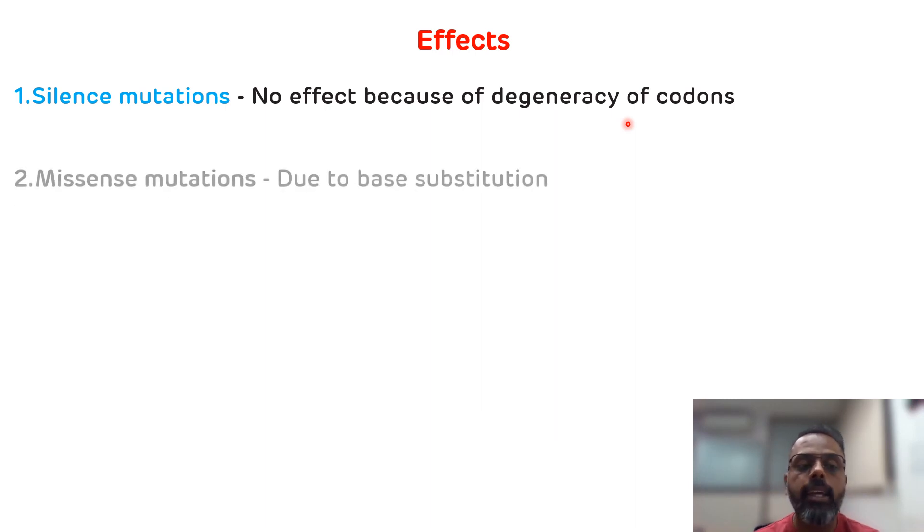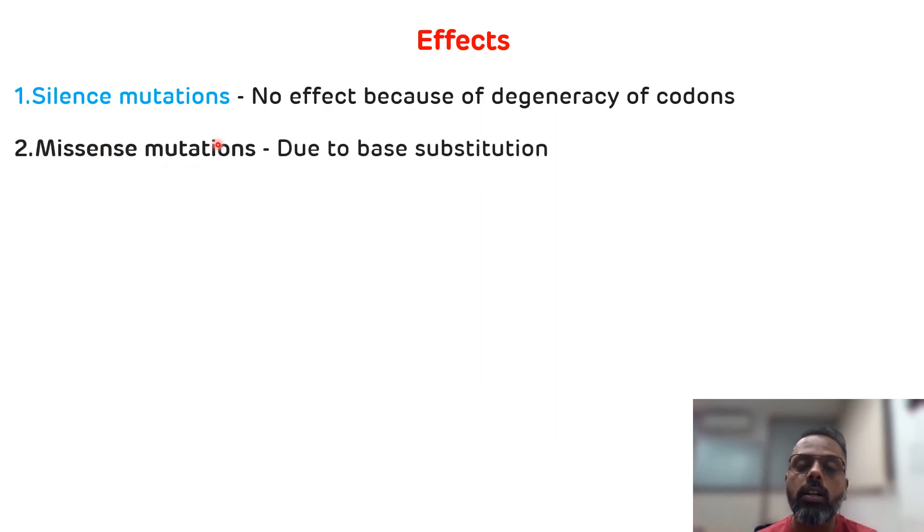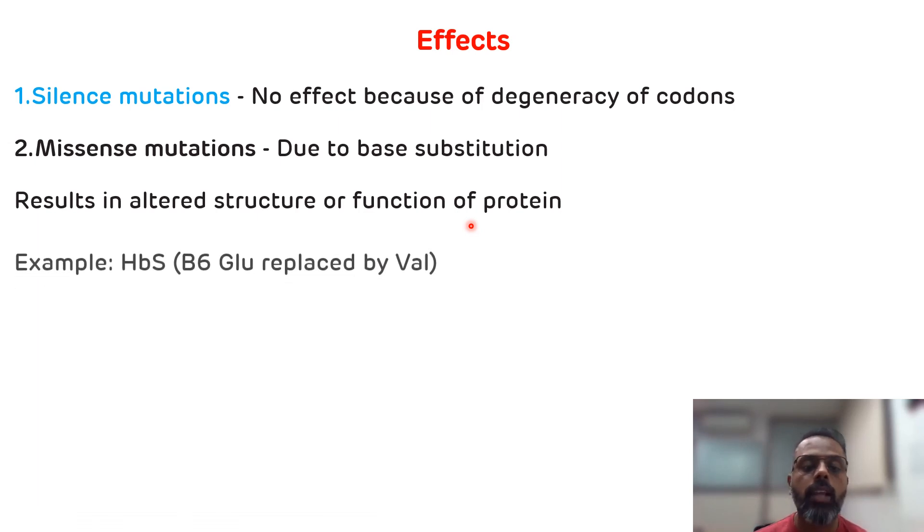Second one is the missense mutation. Missense mutation occurs due to base substitution which results in altered function or structure of protein. One such example is HBS which is seen in sickle cell anemia where glutamic acid is replaced by valine at the sixth position of beta chain.